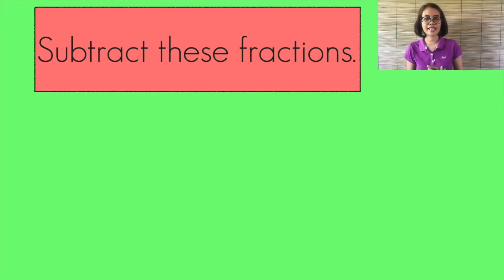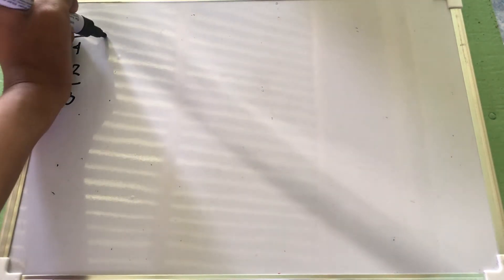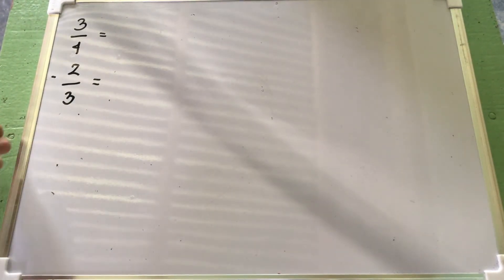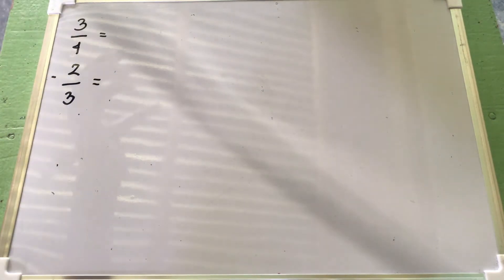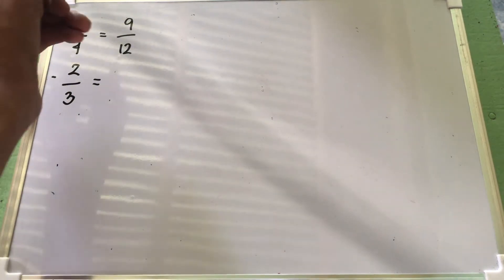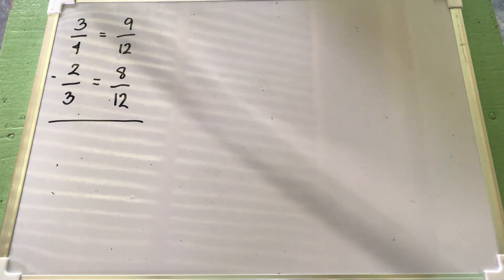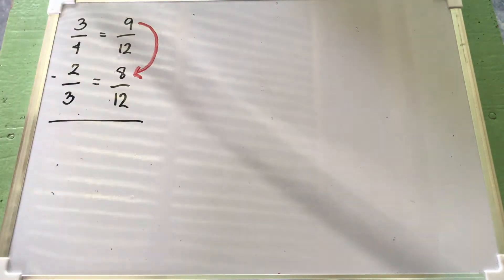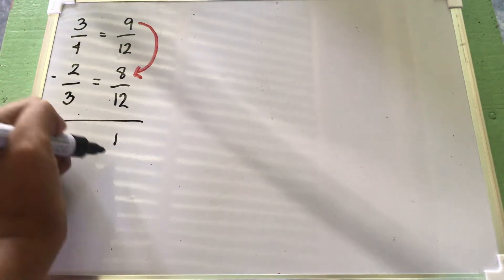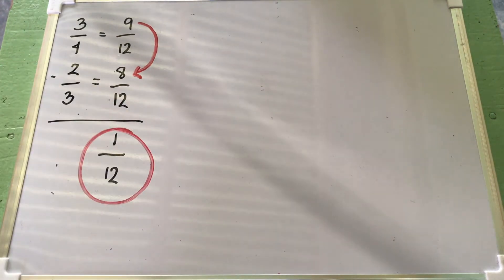For our third example, let's have dissimilar fractions. Let's subtract 3 fourths minus 2 thirds. We will convert them into similar fractions. The LCD is 12. 12 divided by 4 equals 3, times 3 equals 9 over 12. And 12 divided by 3 equals 4, times 2 equals 8 over 12. Now we can subtract since they are similar fractions: 9 minus 8 equals 1. Copy the denominator. The final answer is 1 twelfth.